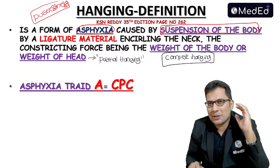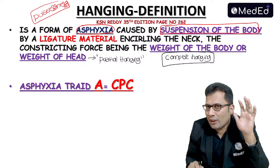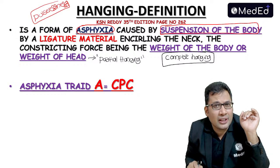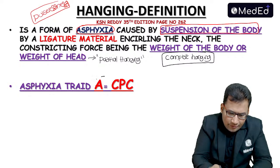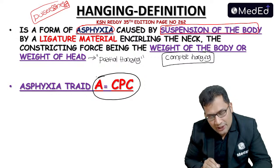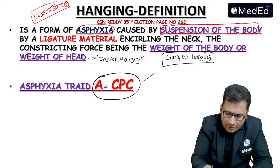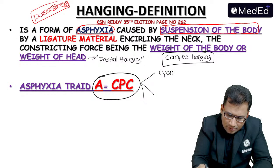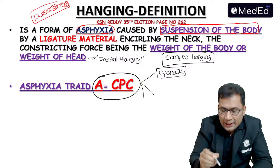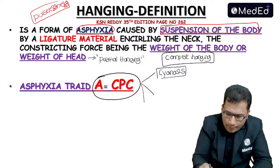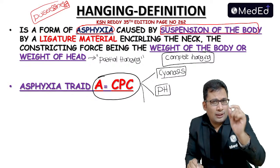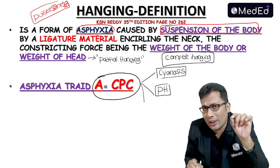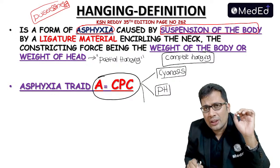In general asphyxia, there are three important findings known as the asphyxia triad. The mnemonic is A = CPC. C is for cyanosis — there is cyanosis in hanging because of venous obstruction. P is for petechial hemorrhages — in any case of asphyxia, whether hanging or ligature strangulation, there can be pinpoint hemorrhages known as petechial hemorrhages. They are also known as Tardieu spots.